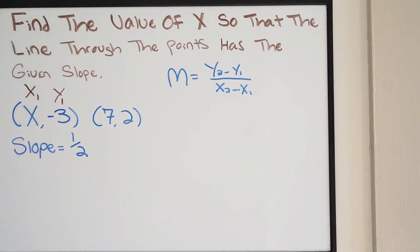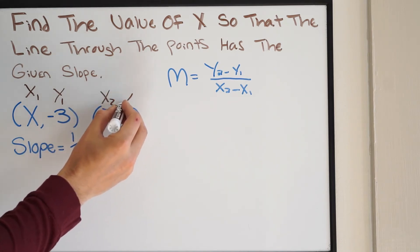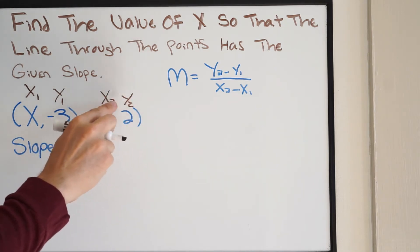In this case, I'm keeping the ones together. I'm not going to call this y2. So if this is x1, this has to be y1. And as a result, this is going to be x2, y2. Again, keeping my twos together.